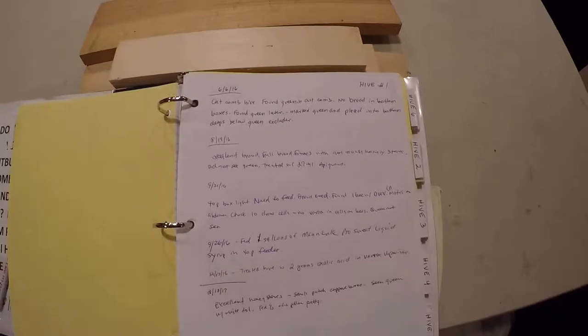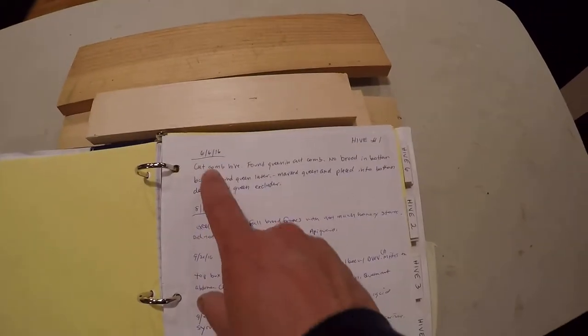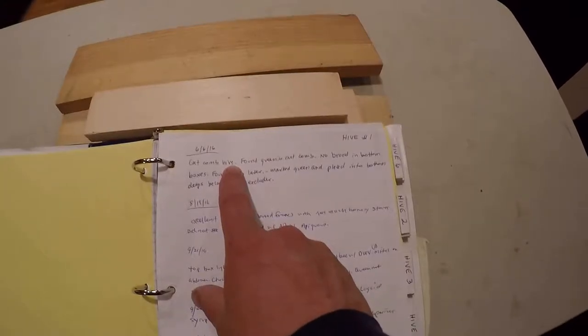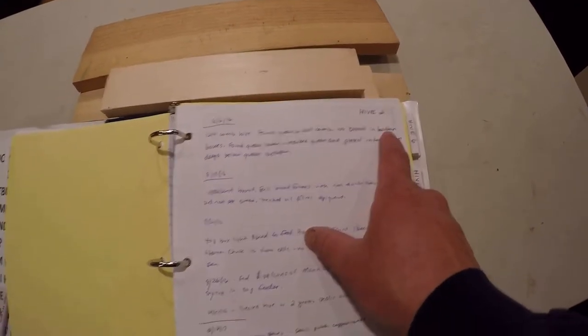For me, I'm a little bit old school. This is the kind of information I own here. Hive one, date 6/16 I was in there. This was the cut comb hive. I found my queen in the cut comb. No brood in the bottom boxes. After doing a hive inspection, I found the queen later.